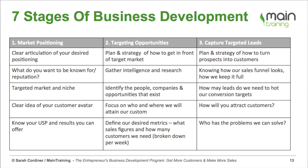We're going to look at who we're going to sell to and where we're going to go in order to actually find those customers. We're also going to look at how many of each of those different types of people we're actually going to need in order to hit our targets. So take the time now to answer: what are your targeting opportunities and how are you going to get in front of your target audience?